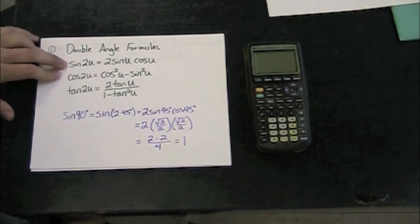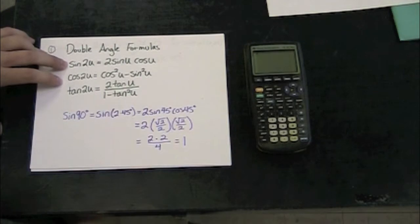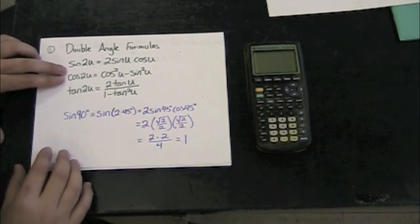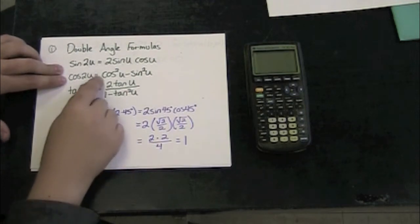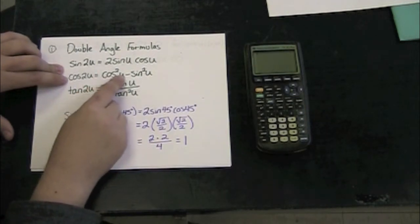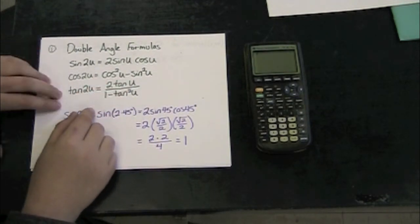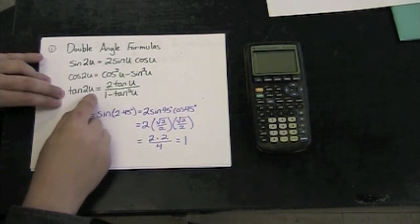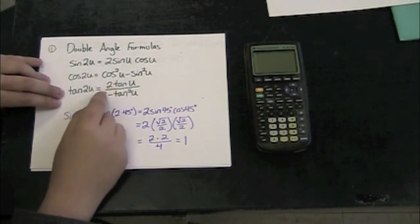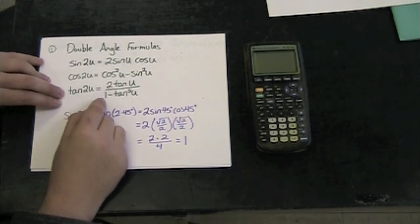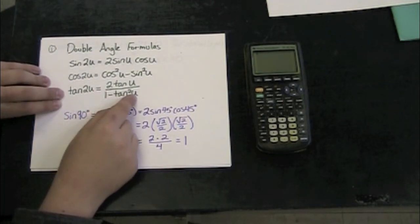I have sine of twice an angle equals 2 times the sine of that angle times cosine of that angle. I have cosine of twice an angle equals the cosine squared of the original angle minus sine squared of the original angle, and I have tangent of twice an angle is equal to 2 times the tangent of an angle divided by 1 minus the tangent squared of an angle.